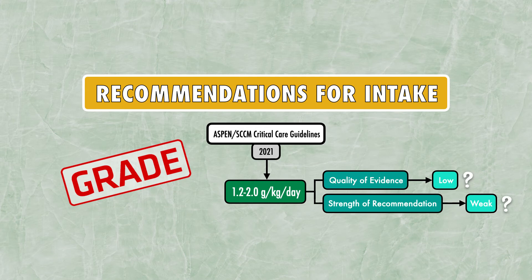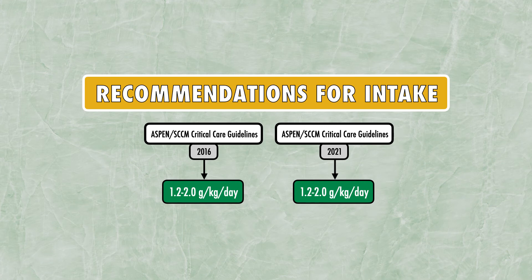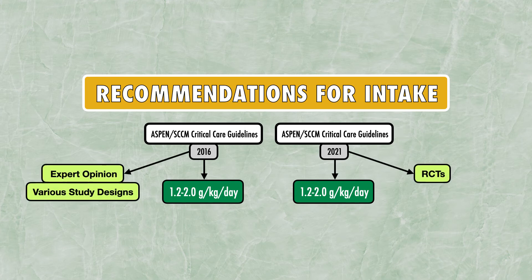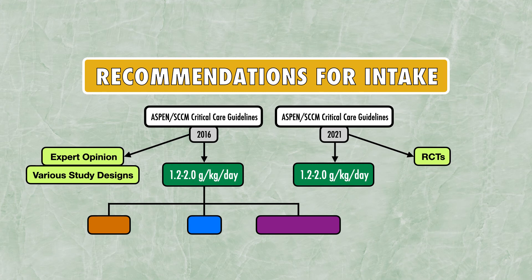This means there's a lack of certainty regarding the harms and benefits. This recommendation of 1.2 to 2.0 grams per kilogram per day is consistent with the 2016 guidelines. Nevertheless, one difference is that in 2016 the authors allowed for recommendations based on expert opinion and various study designs, whereas in 2021 they only featured recommendations based on randomized controlled trials. So in the 2016 guidelines there are three protein recommendations that don't appear in the 2021 guidelines.